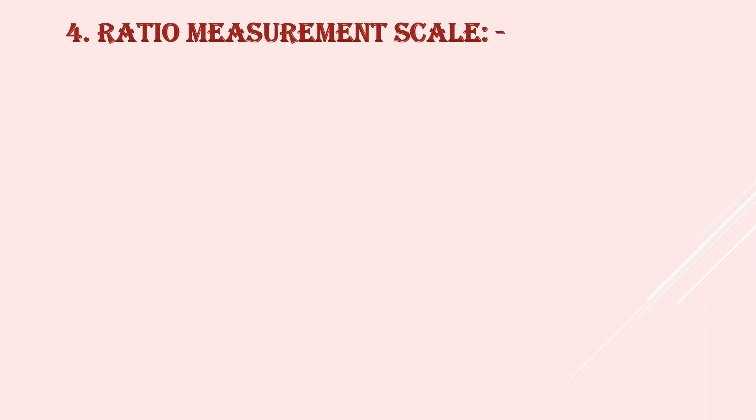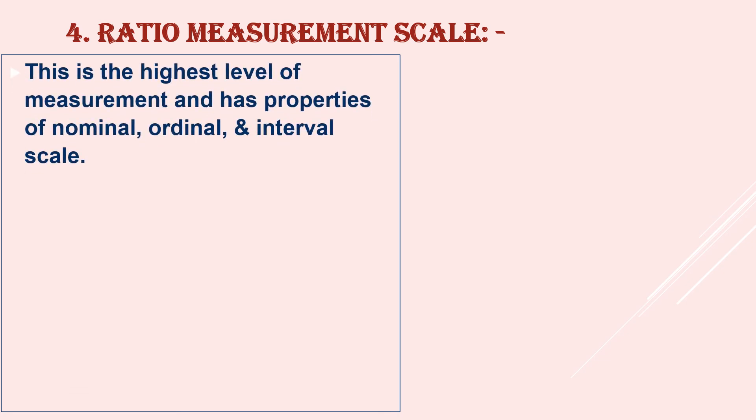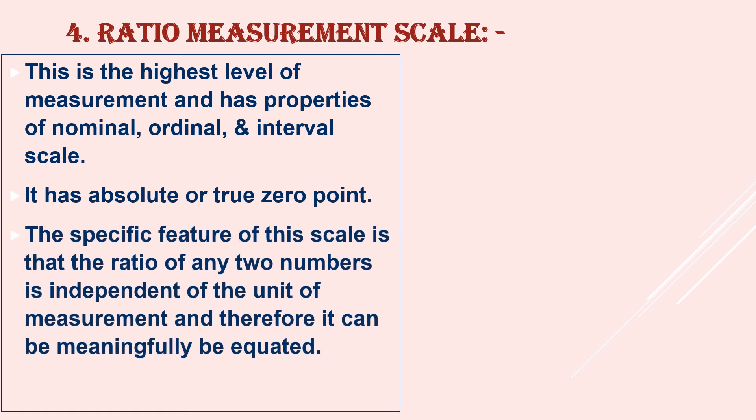Finally, the fourth level of measurement or fourth scale of measurement is ratio measurement scale. This is the highest level of measurement and has properties of nominal, ordinal and interval scale. The salient feature of this scale is it has absolute or true zero point. Another specific feature of the scale is that the ratio of any two numbers is independent of the unit of measurement and therefore it can meaningfully be equated. And the example is ratio 16 is to 28 which is equal to 4 is to 7.